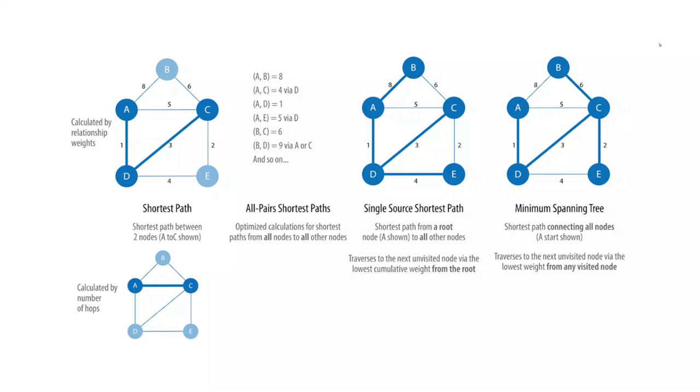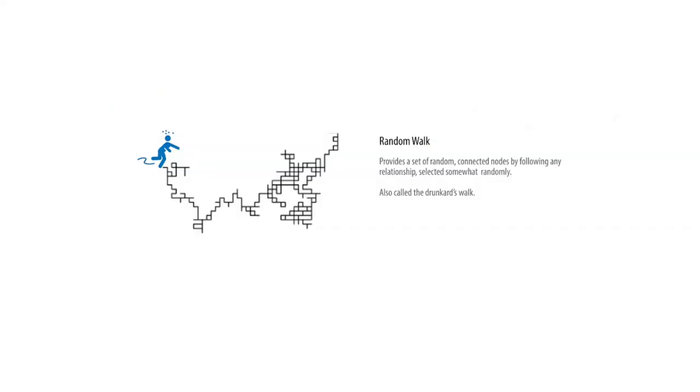Single source shortest path finds the shortest path from a specific node to all other nodes. Minimum spanning tree starts from a node and finds the shortest path that connects all the nodes you can get to. And finally we've got the random walk algorithm, where we start from a node and then randomly follow the relationships from there outwards.